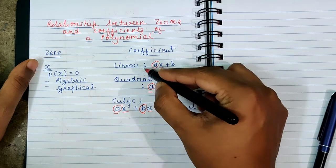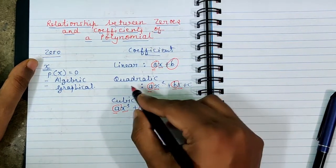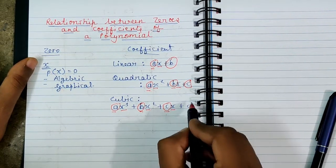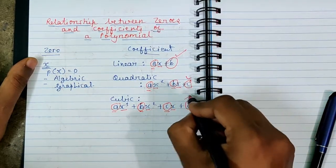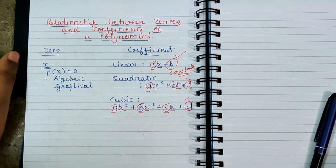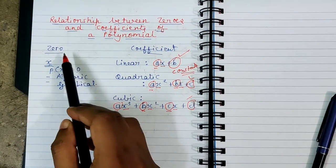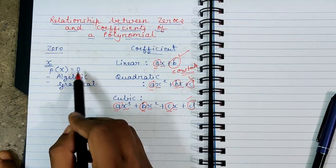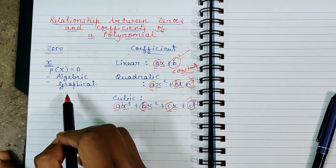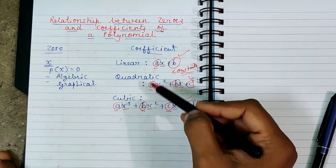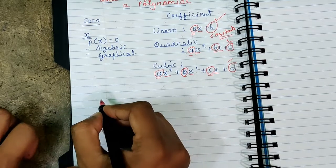In a linear equation we have ax + b; in quadratic, ax² + bx + c; in cubic, ax³ + bx² + cx + d. The values b, c, and d can also be called constants because they do not have any variable attached. So to recap: the zero of a polynomial is that value of x at which p(x) becomes zero, and coefficients are constant terms attached to variables in a polynomial.